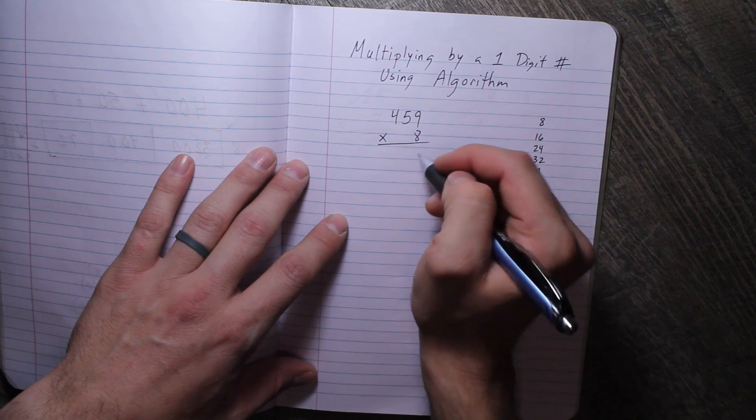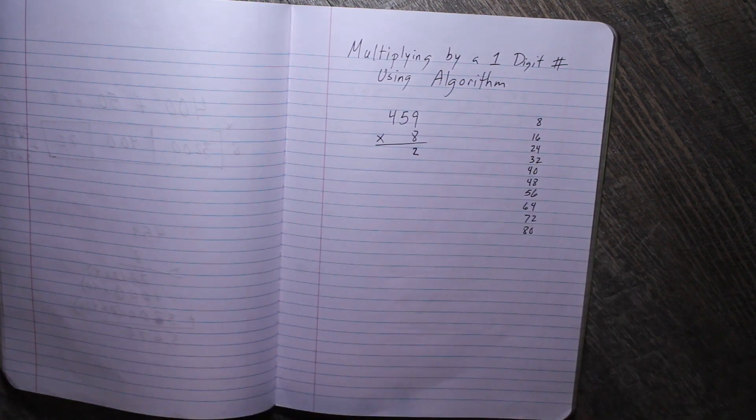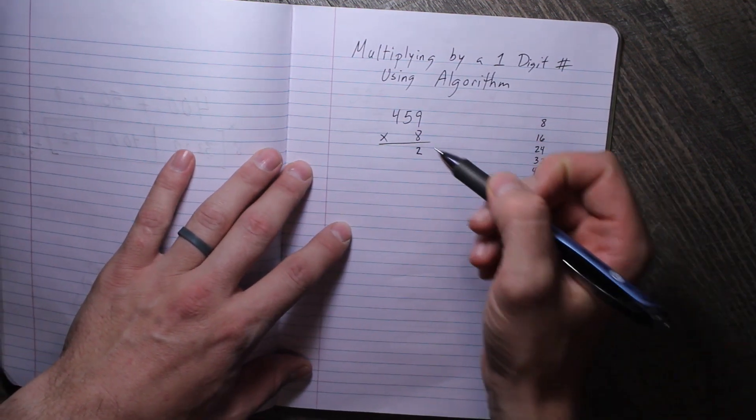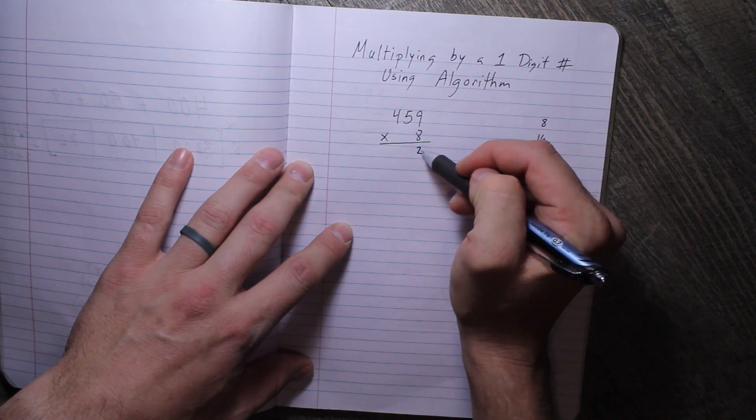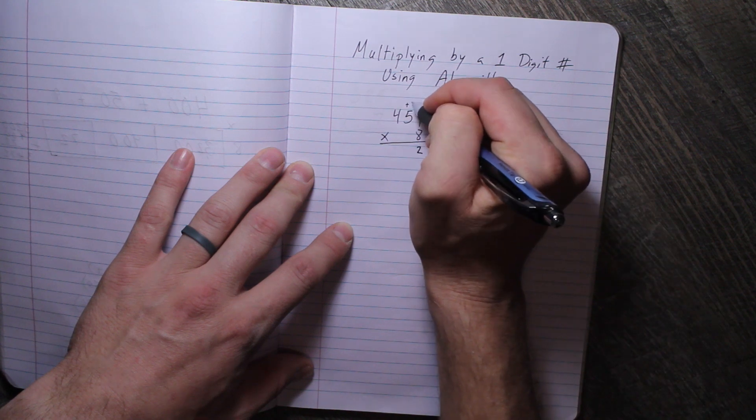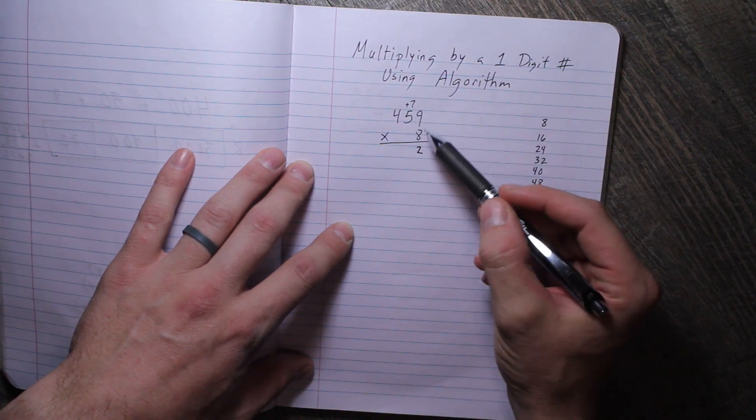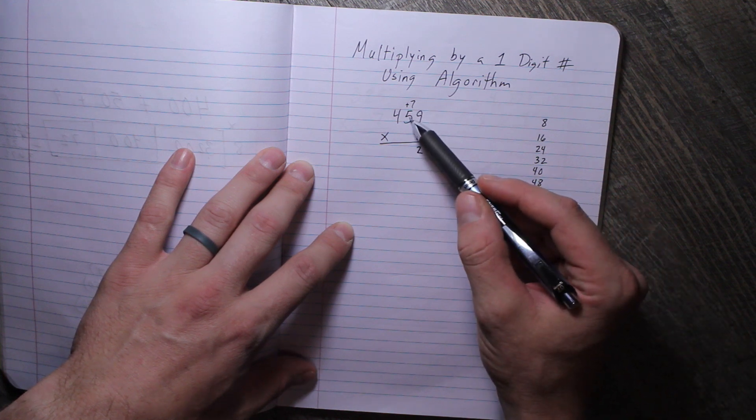So 459 times 8: 8 times 9 is 72. I'm going to multiply and add at the same time. Just like we carry with addition, we're going to do the same thing with multiplication. So 8 times 9 is 72. I'm going to put the 2 in the ones place because that's where we're multiplying from, and then I'm going to put the 7 above the tens place.